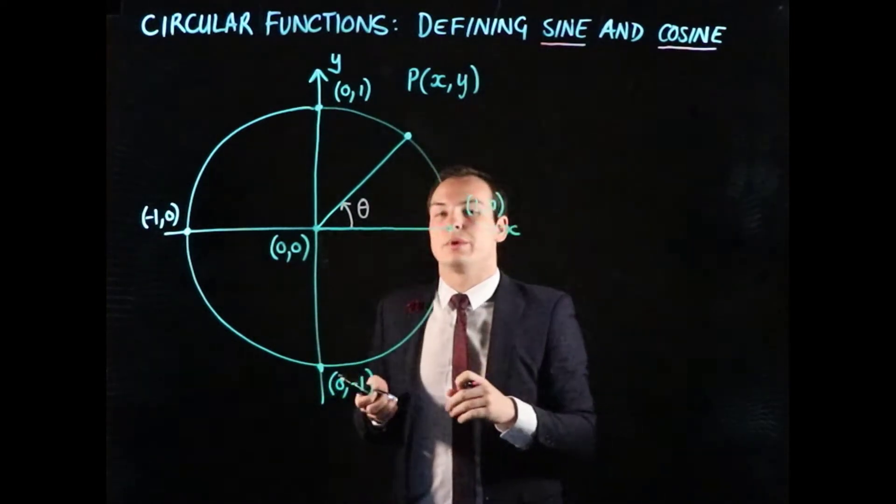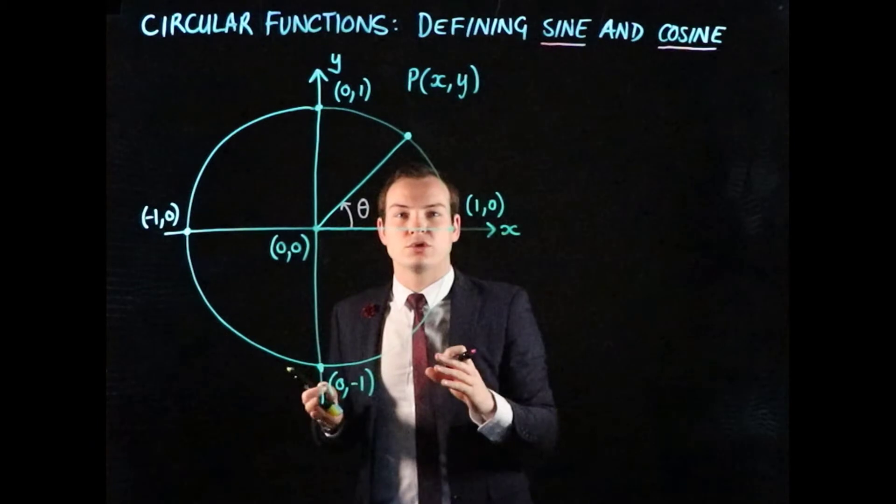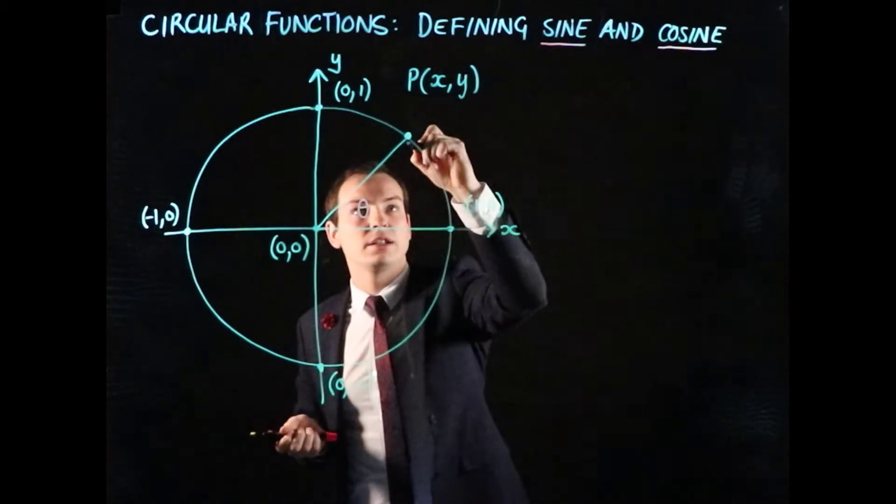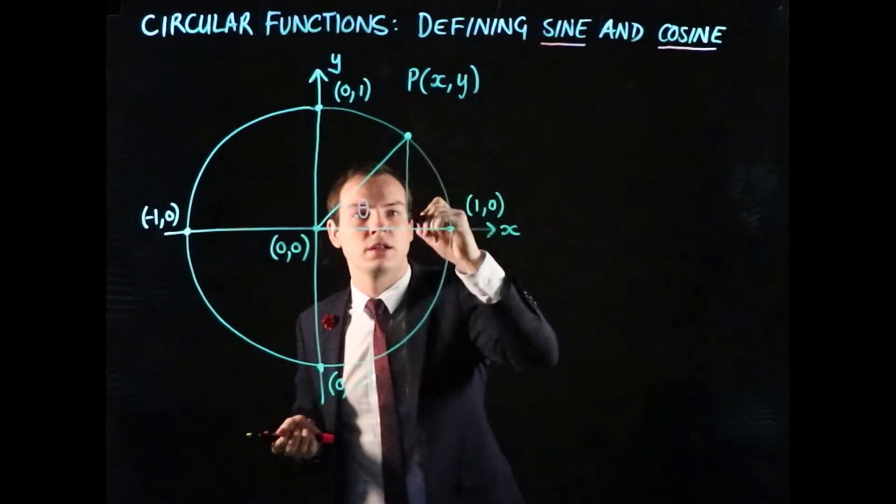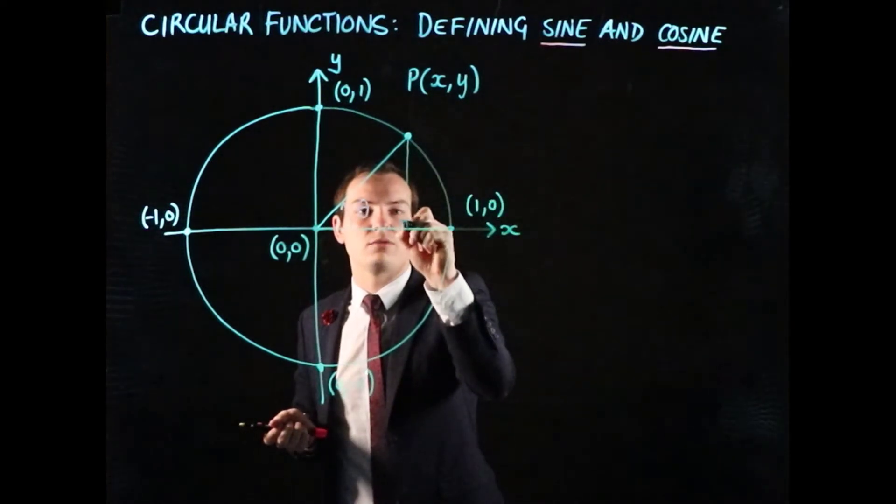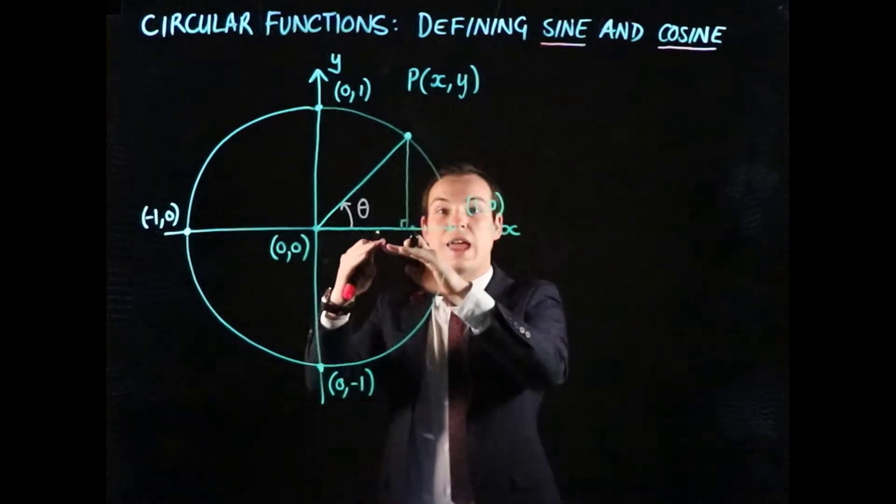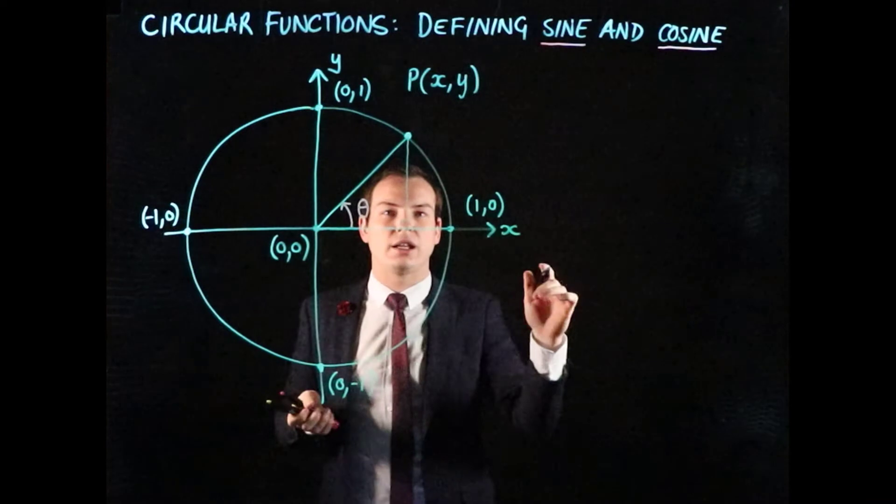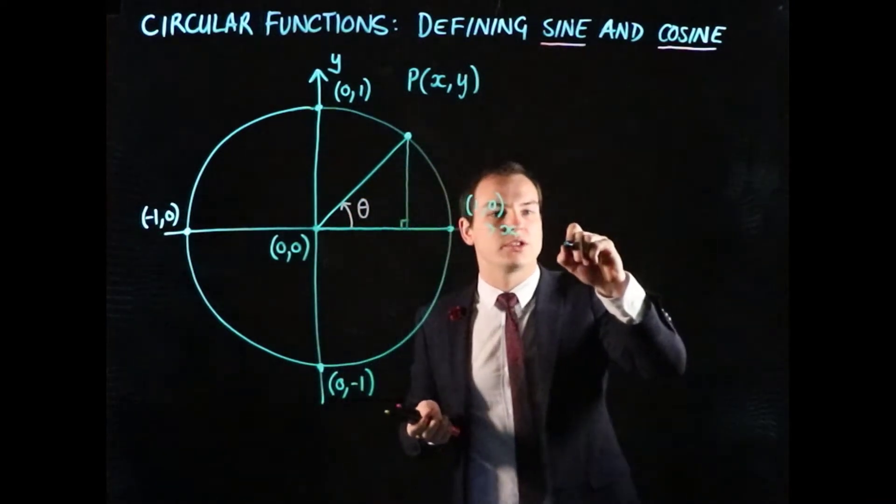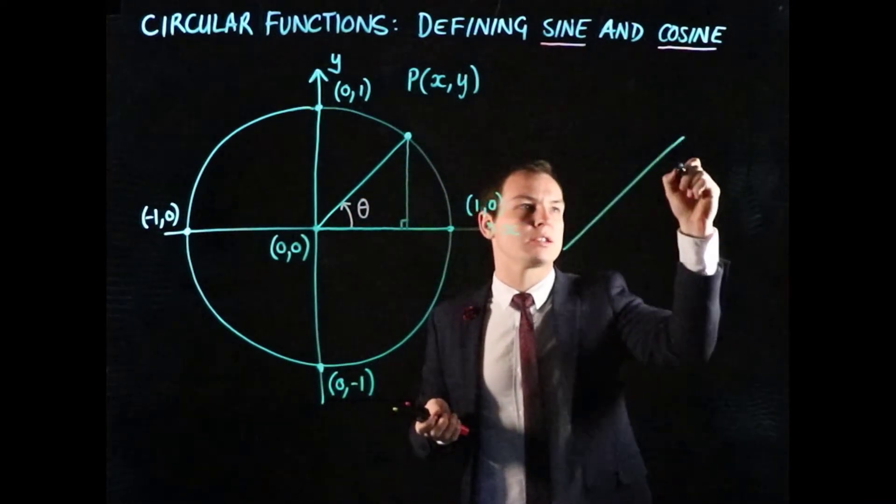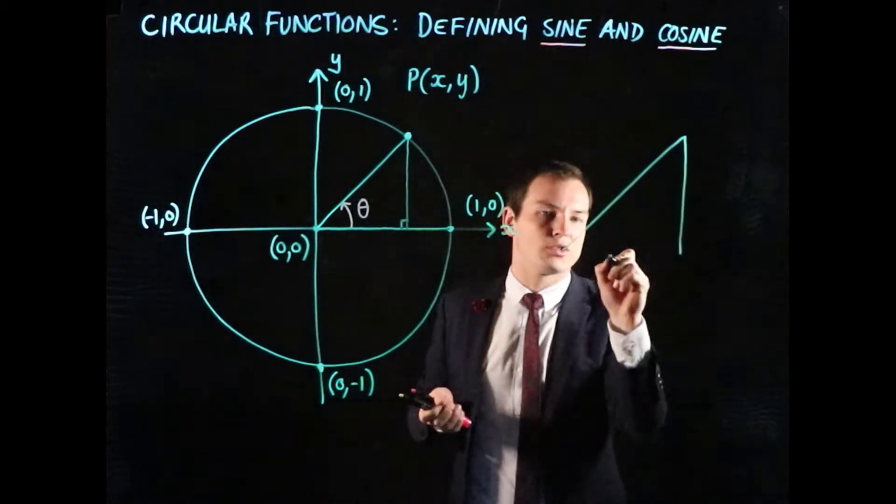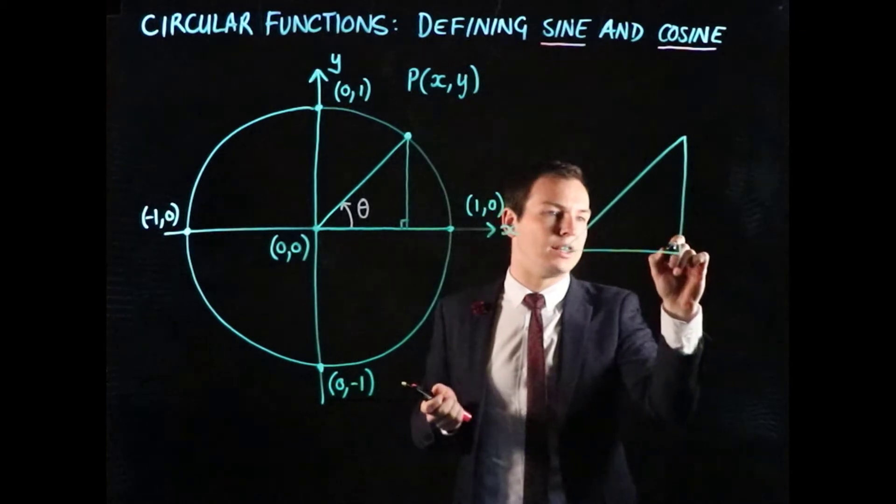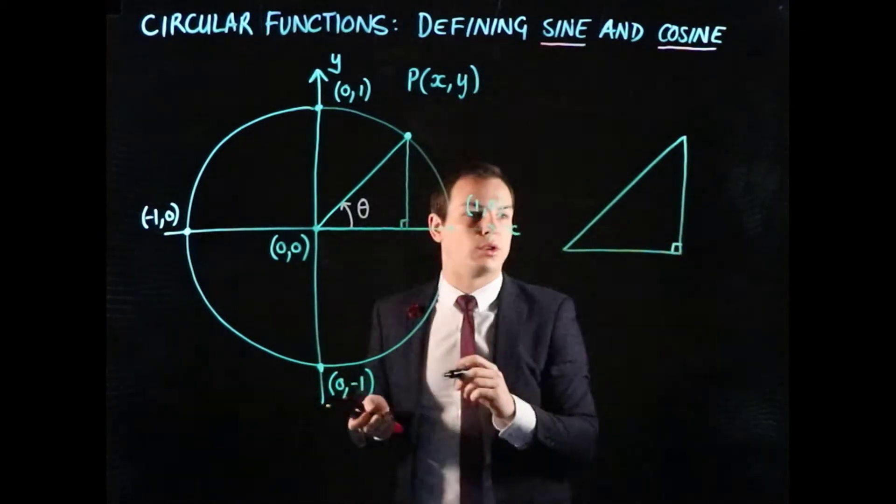So what we're going to do now is build a right angle triangle into this diagram. We're just going to drop a line straight down here, and it is going to create a right angle with the x-axis. So we've now got a right angle triangle, and I'm just going to draw that out a little bit larger over here. This would have been our radius, this would have been the line I just drew in, and this is part of that horizontal x-axis, and this is the right angle.